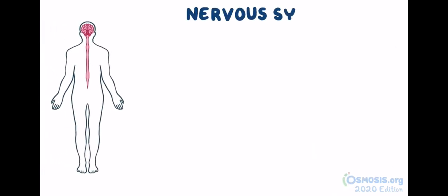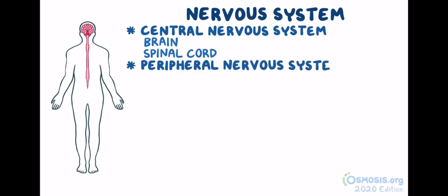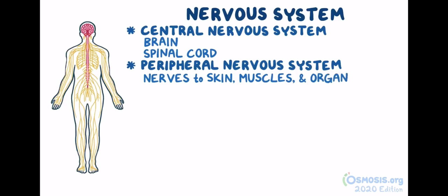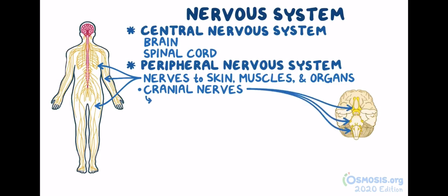Now, let's first talk a bit about the nervous system. It consists of two parts: the central nervous system, which includes the brain and the spinal cord, and the peripheral nervous system, which includes the nerves that fan out from the central nervous system to reach the skin, muscles, and organs. Peripheral nerves that originate from the brain are called cranial nerves, and they're in charge of motor and sensory innervation of the head and neck.